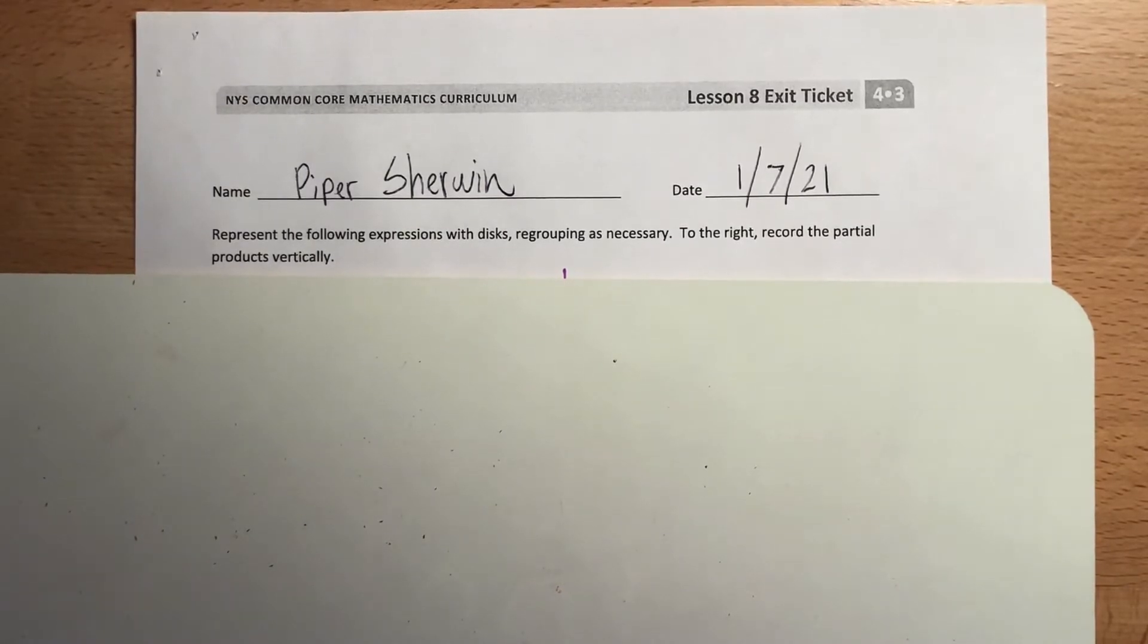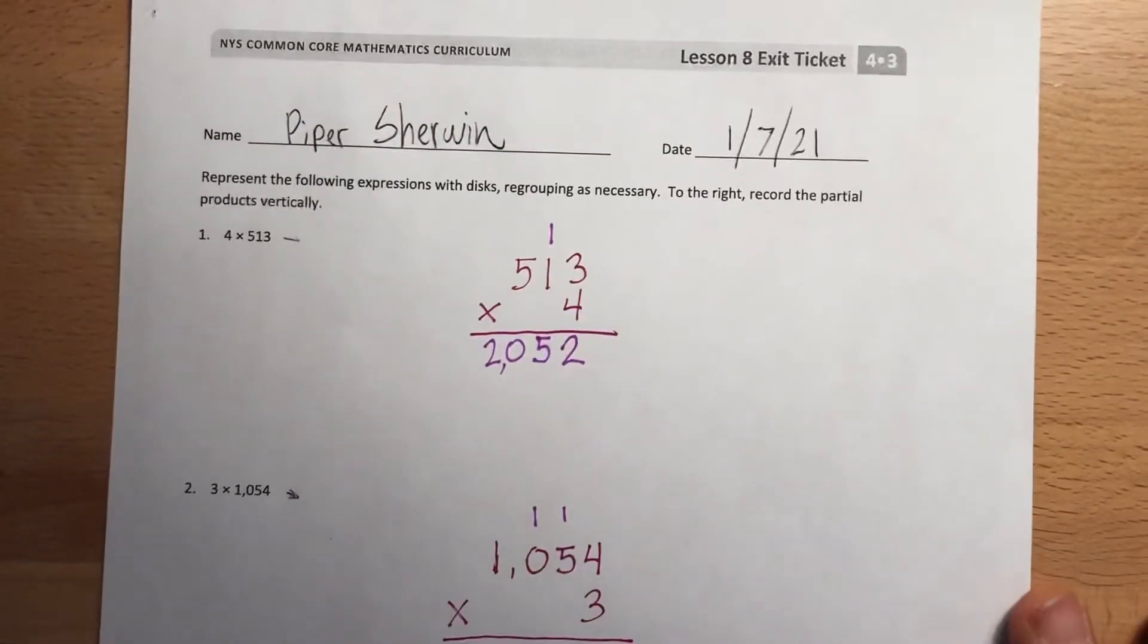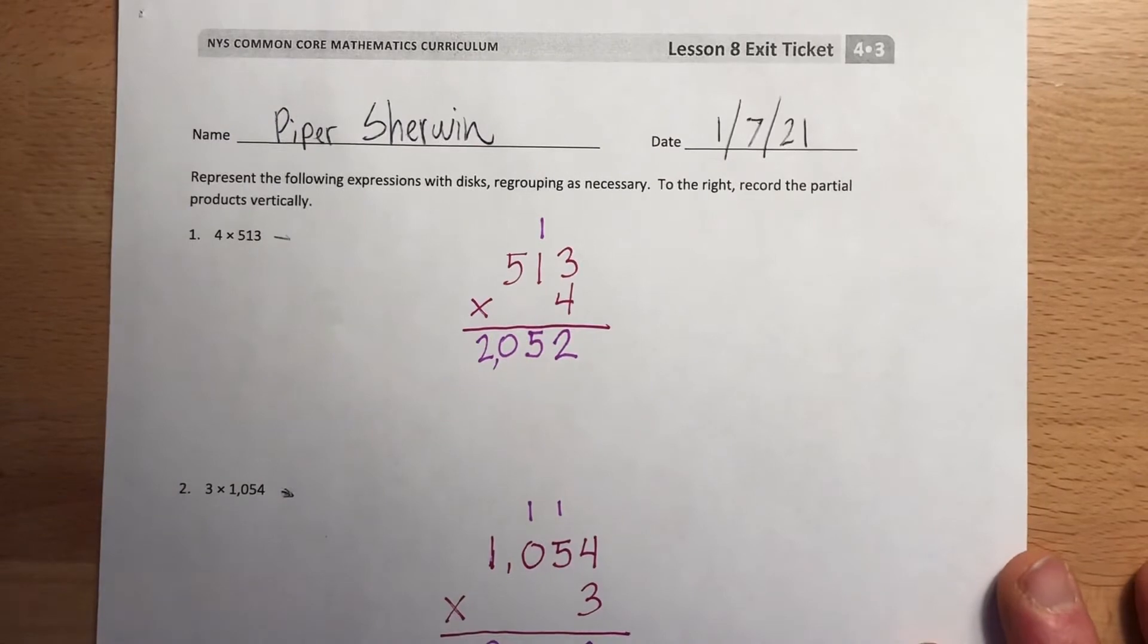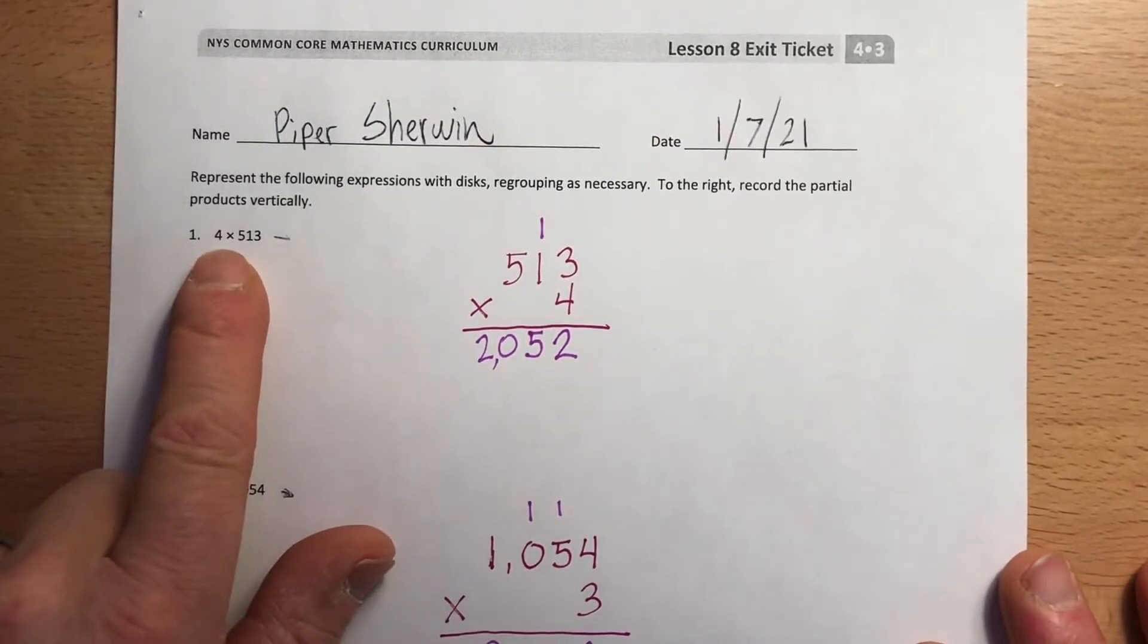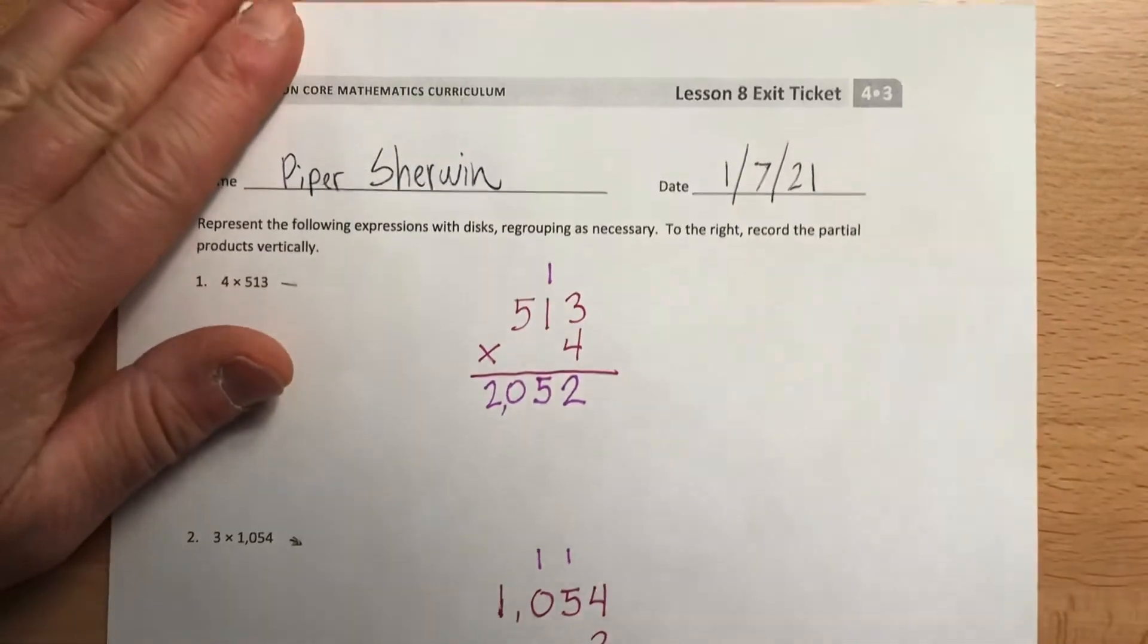Hopefully that was pretty quick for you. Hopefully you remember what we did yesterday, but don't worry, we're going to be doing more of it today. Here are the answers. These are correct, verb subject agreement. Over here I had 4 times 513. That's what I wrote here, put the big number on top of course. Let me zoom in a little bit so you can see what's going on.